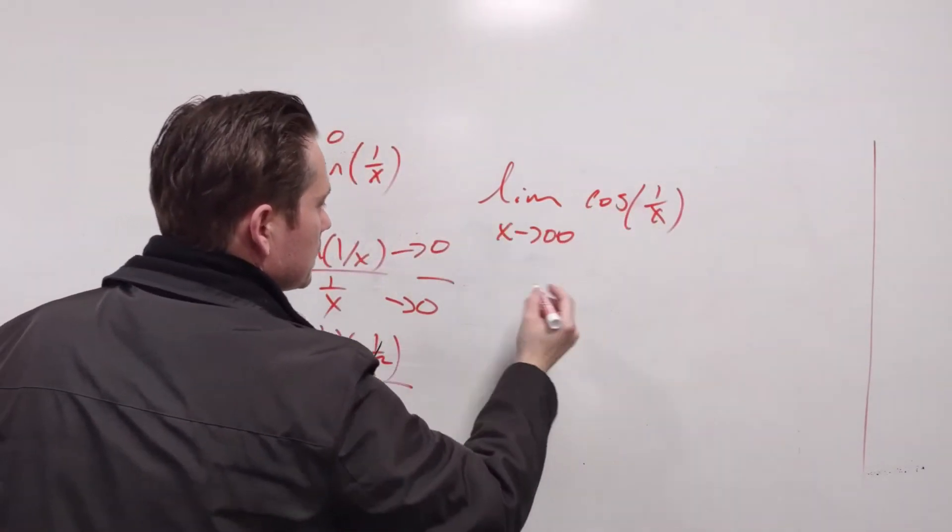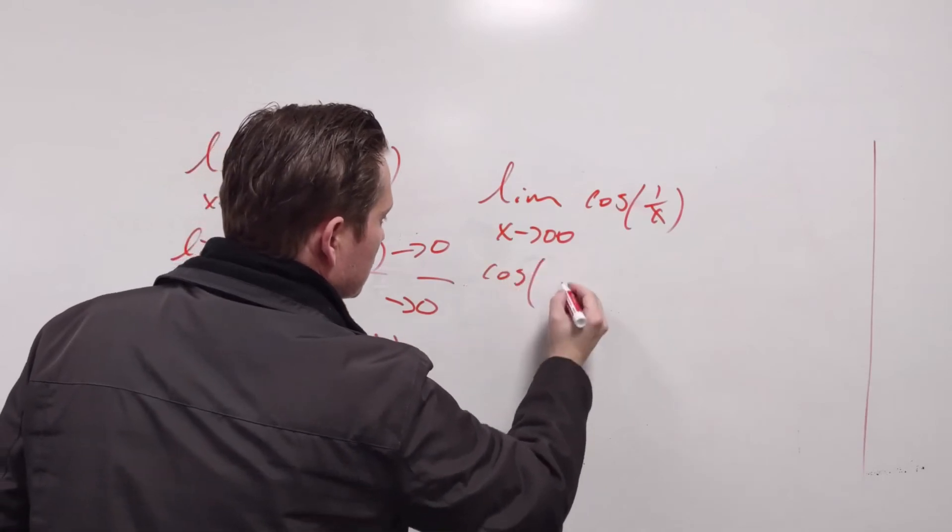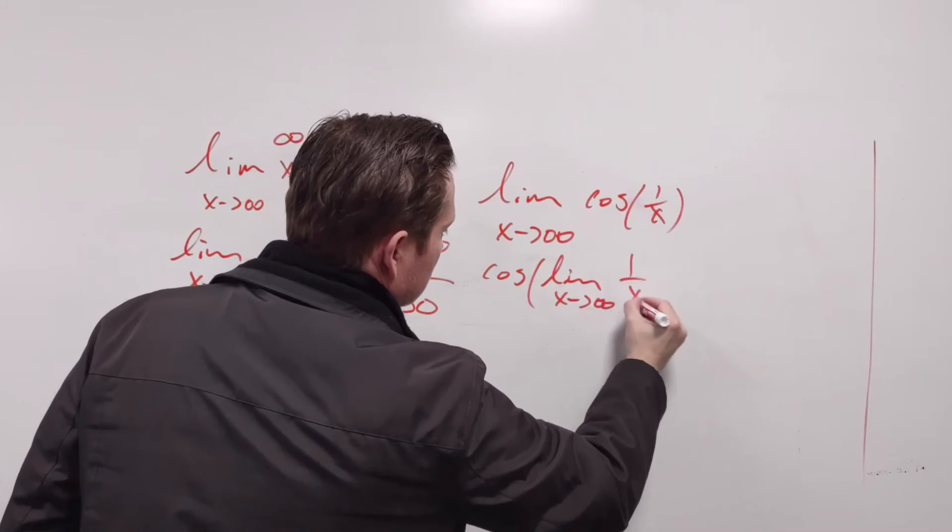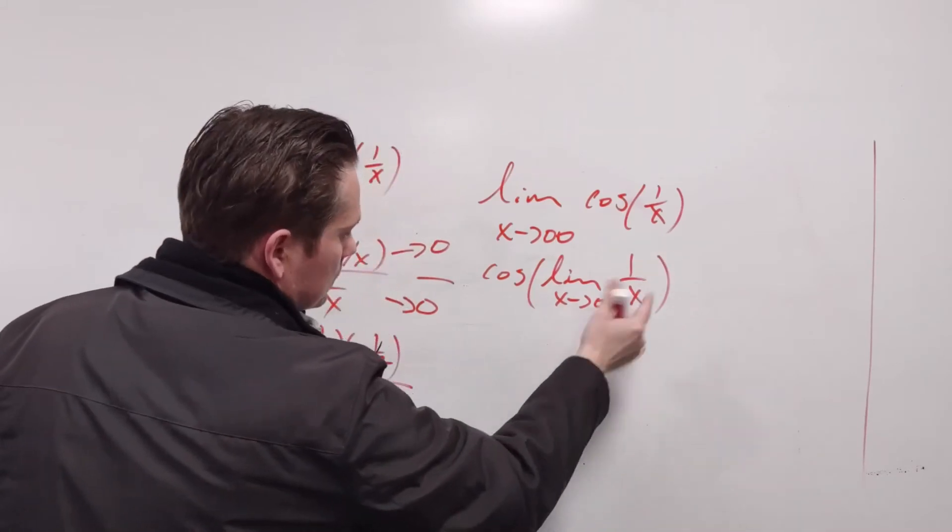Now cosine is continuous, so put the limit inside. So you're going to have cosine of the limit as x goes to positive infinity of 1 over x. Now this limit is known to be 0.